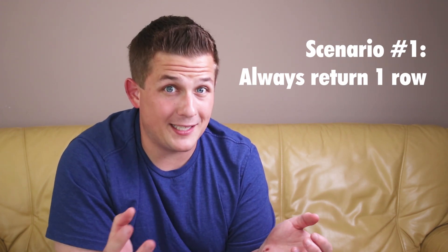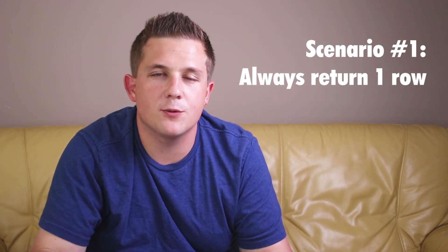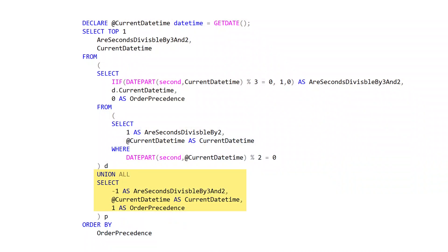One scenario you might run into is where you always want to return a row. Our derived table isn't always going to return a record, but let's say we always wanted our final outer query to return a row. The way I typically like doing this is to UNION ALL a placeholder value that I want to return when my actual query doesn't have any results. When I UNION ALL that additional query, I like adding a column called order precedence, which gives me an idea of which row should be displayed. When my original query does have data, I want that data displayed, but when it doesn't, we fall back to the secondary query. Adding a TOP 1 ordered on that order precedence column means SQL Server will only return our extra placeholder value record when our original query doesn't have any rows at all.